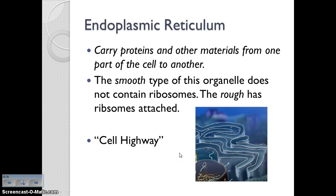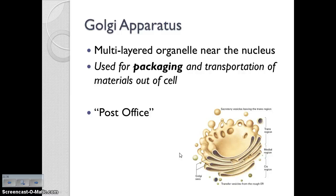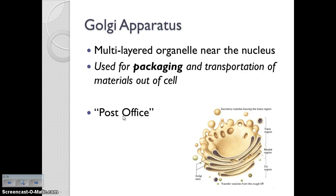Next up we have the Golgi apparatus, also called the Golgi body or Golgi complex — they're all the same thing. This is a multi-layered organelle found near the nucleus and is used for packaging and transportation of materials out of the cell. Anytime you hear 'package and transport,' that is the Golgi body. That's why we call it the post office or FedEx of the cell. The endoplasmic reticulum and Golgi apparatus are found in all eukaryotic cells — animal and plant cells.